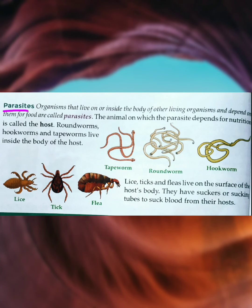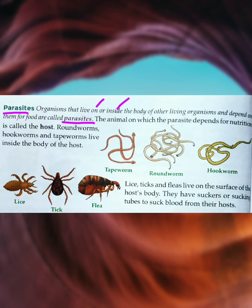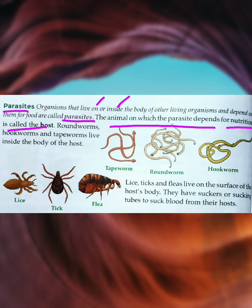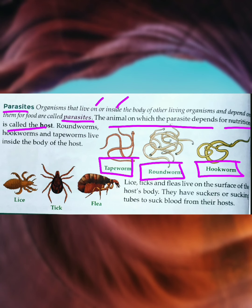Next are parasites. Organisms that live on or inside the body of other living organisms and depend on them for food are called parasites. The animals on which the parasite depends for nutrition are called the host. Organisms that live inside the body of the host include tapeworm, roundworm, and hookworm.